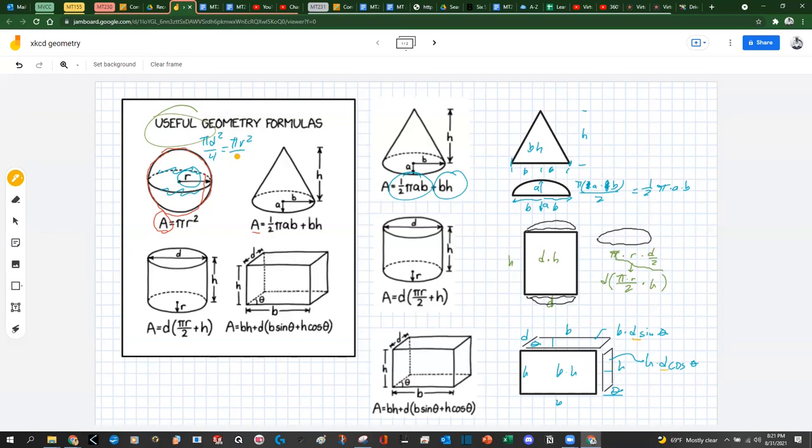So notice how d is in each one of the formulas, sorry, in these two formulas. And so we can factor that out. And so we end up with b times h plus, factored out the d, and then b sine theta up here. And then h cosine theta from here. The d gets factored out. And we end up with the same formula as here. Okay, well, I hope that helped clear that up. And if you like this video, just click like. And thanks for watching.